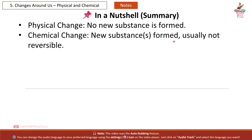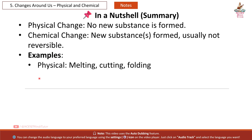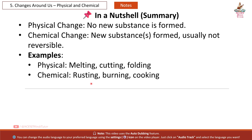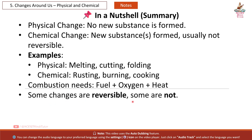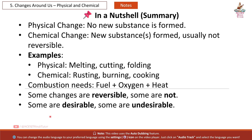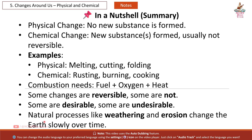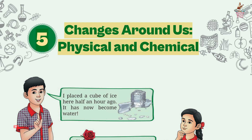In a Nutshell — Summary: Physical change: no new substance is formed. Chemical change: new substance is formed, usually not reversible. Examples — Physical: melting, cutting, folding. Chemical: rusting, burning, cooking. Combustion needs fuel plus oxygen plus heat. Some changes are reversible, some are not. Some are desirable, some are undesirable. Natural processes like weathering and erosion change the Earth slowly over time.